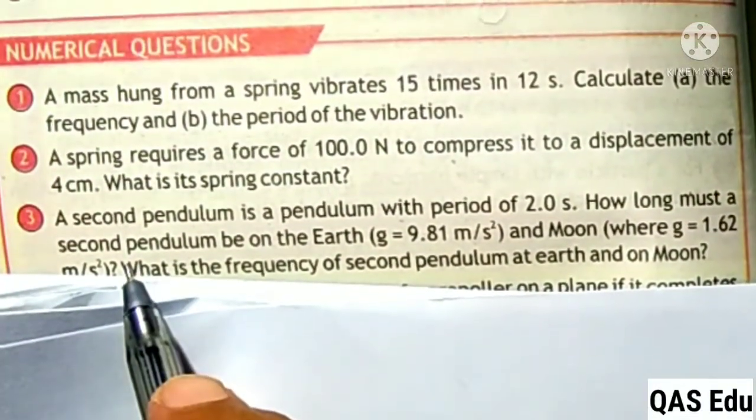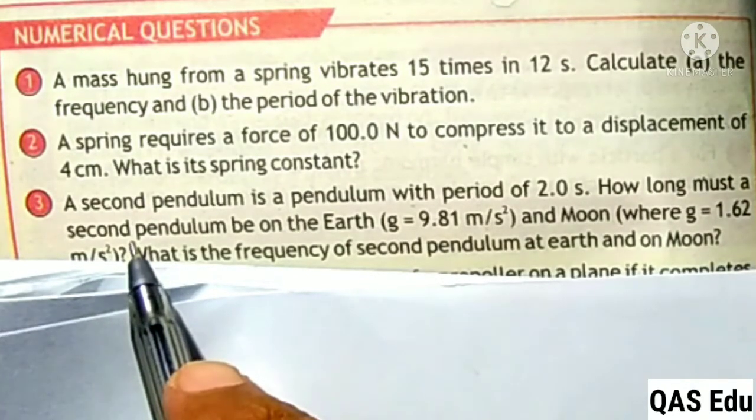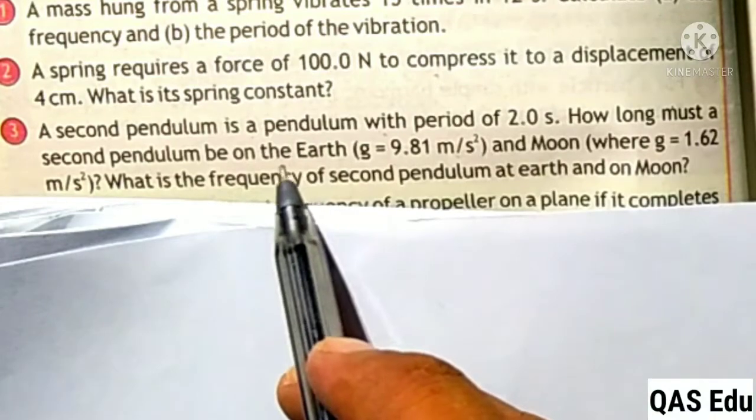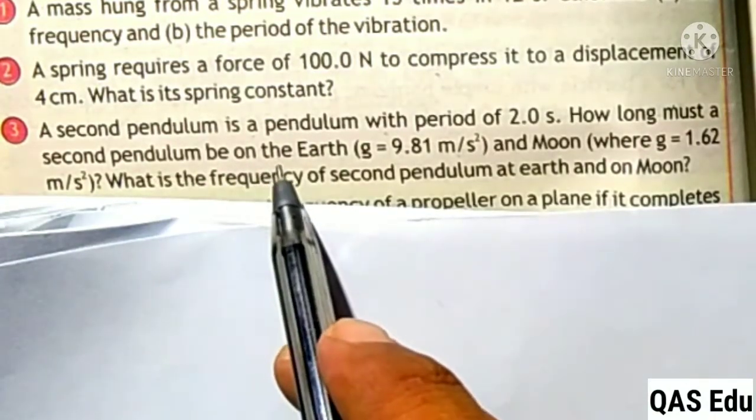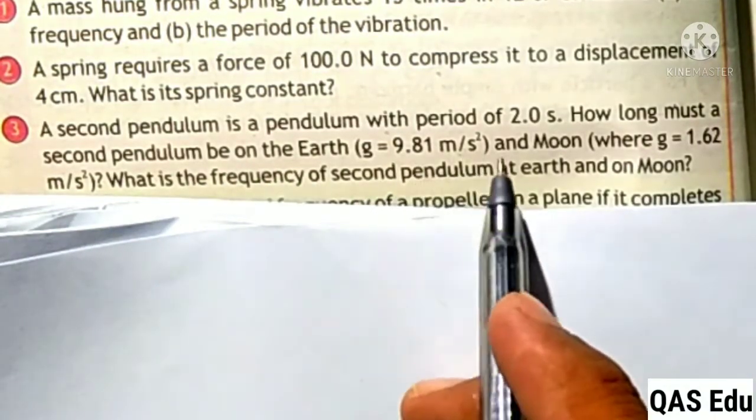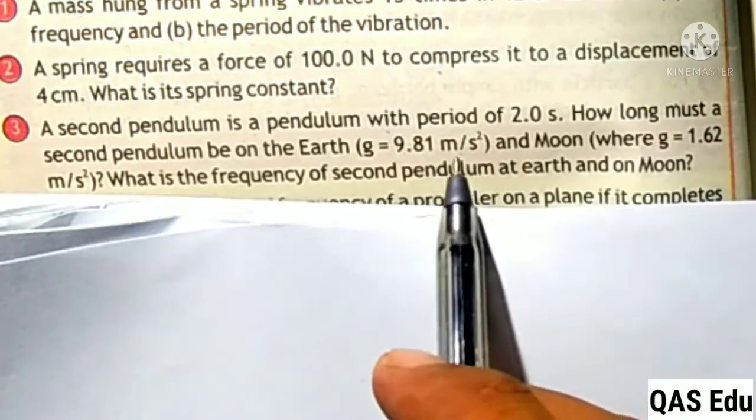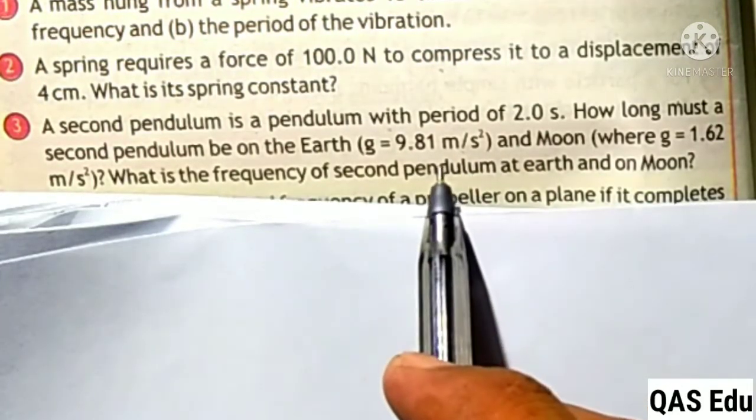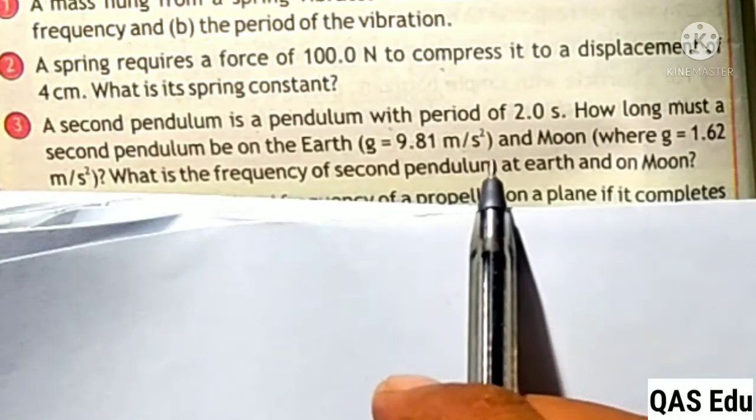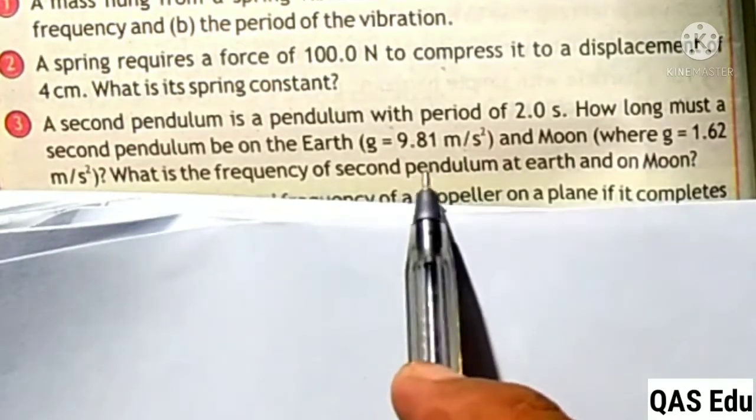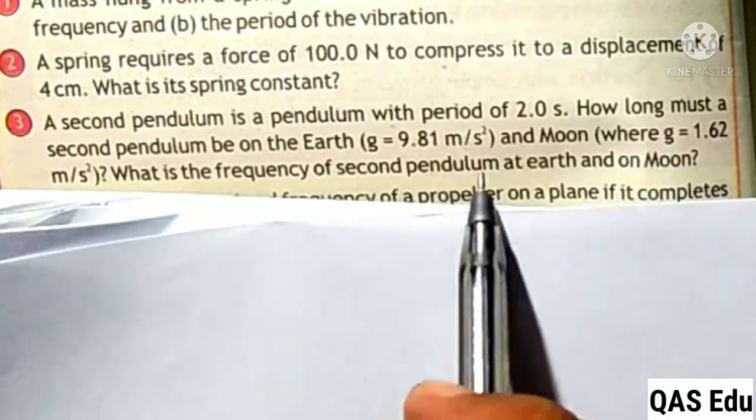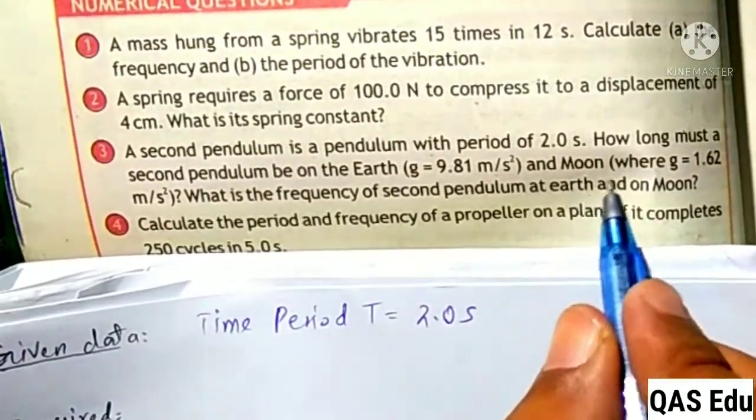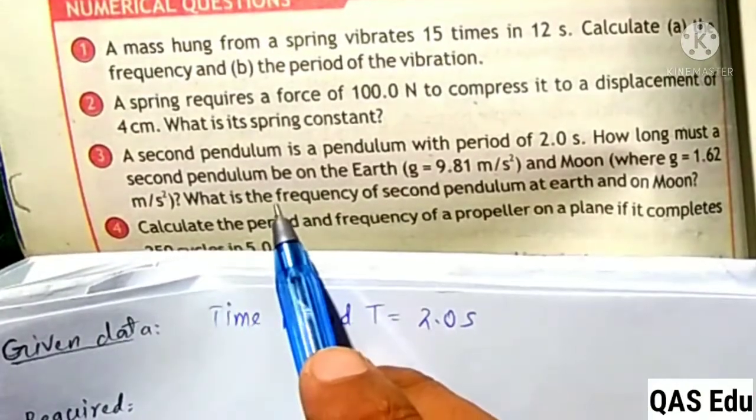10th Class Physics Numerical, Question Chapter Number 1, Question Number 3. A second pendulum is a pendulum with a period of 2.0 seconds. The time period is 2.0 seconds. This is the given data. How long must a second pendulum be?